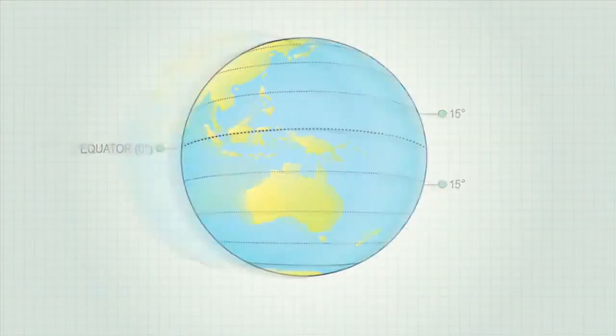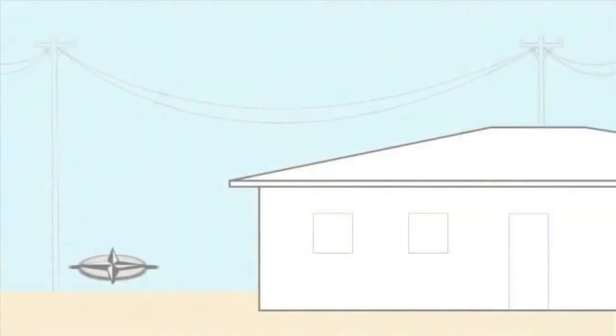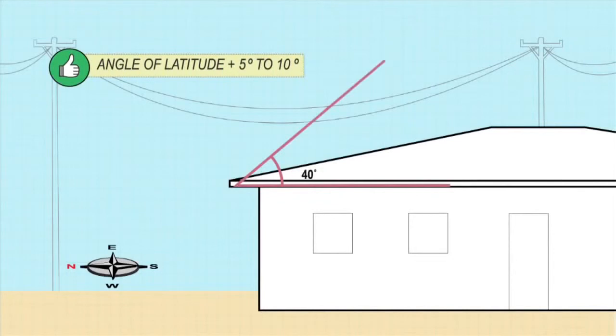The ideal inclination is the angle of latitude plus 5 to 10 degrees. Sydney's latitude is 33.5 degrees, so an ideal angle of inclination would be around 40. However, plus or minus 15 degrees would still provide adequate performance.